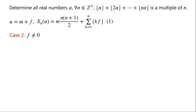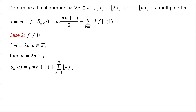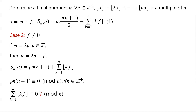Case 2: f ≠ 0. If m is even, let m = 2p where p is an integer. Then α = 2p + f, and S_n(α) = p·n(n+1) + sum from k=1 to n of floor(kf). It is evident that p·n(n+1) is congruent to 0 modulo n for every positive integer n. We need to determine whether the sum of floor(kf) is congruent to 0 modulo n for every positive integer n, in order to find which values of f satisfy the condition.